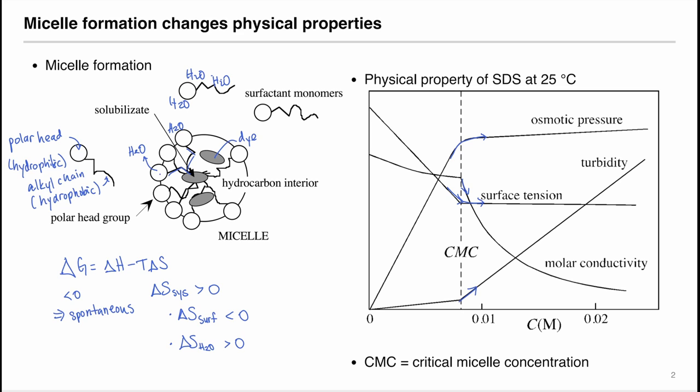Therefore, we can use these change in physical properties to determine the critical micelle concentration. In this case, we're using dye titration method, which monitors the absorbance of the solution to determine the CMC.